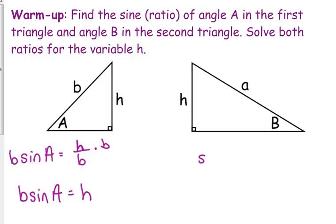For the other one, the sine of B is equal to the opposite, in this case is h, and the hypotenuse is a. So when we solve that for h, we get little a sine of big B is equal to h.